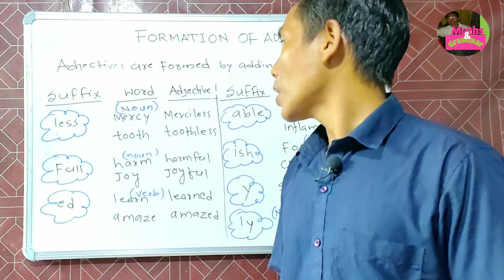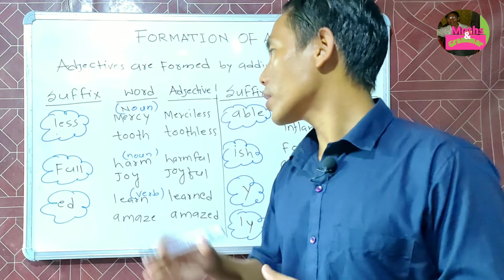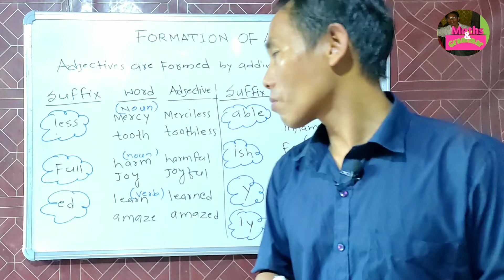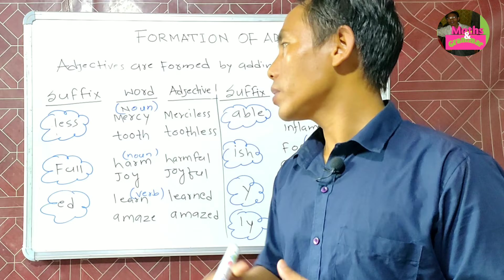Adjectives are formed by adding suffixes to a word. The word can be a noun, a verb, or also an adjective itself. It is easy to form adjective words with the help of suffixes that we have in the English language.